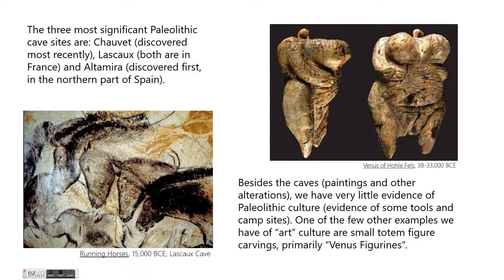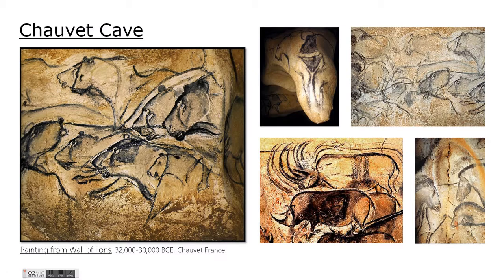There are three main cave sites you should know about, although we will be focusing primarily on Chauvet. The three main cave sites are Chauvet, Lascaux, and Altamira. Altamira was the first discovered and actually one of the earliest cave paintings discovered. Lascaux is very famous. But Chauvet is the one we're going to focus on because it's in the best condition and was the most recently discovered — and it is truly extraordinary. Besides cave paintings, we also have small figurines like the Venus of Holifels as other kinds of art.